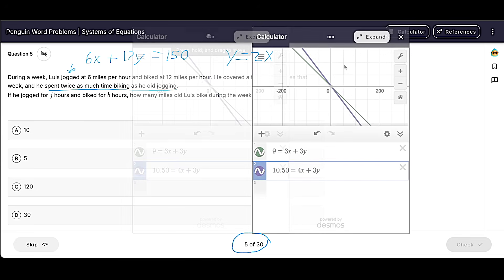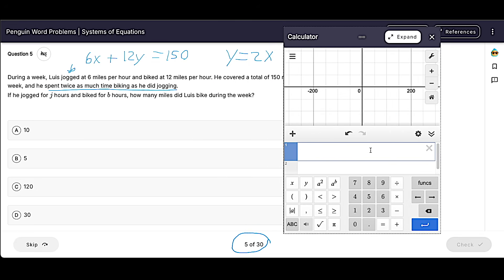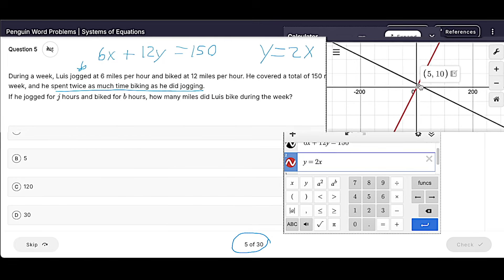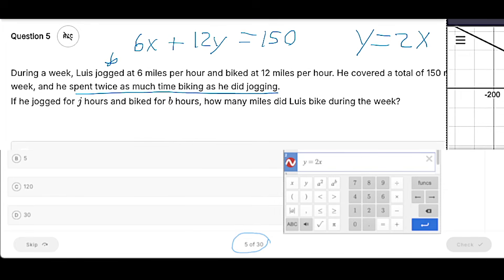Anyway, let's move on. Let's finish this. I'm going to pull up Desmos, stick it over here, throw these in real quick. And we've got 5 and 10. So it says, how many miles did Luis bike during the week?